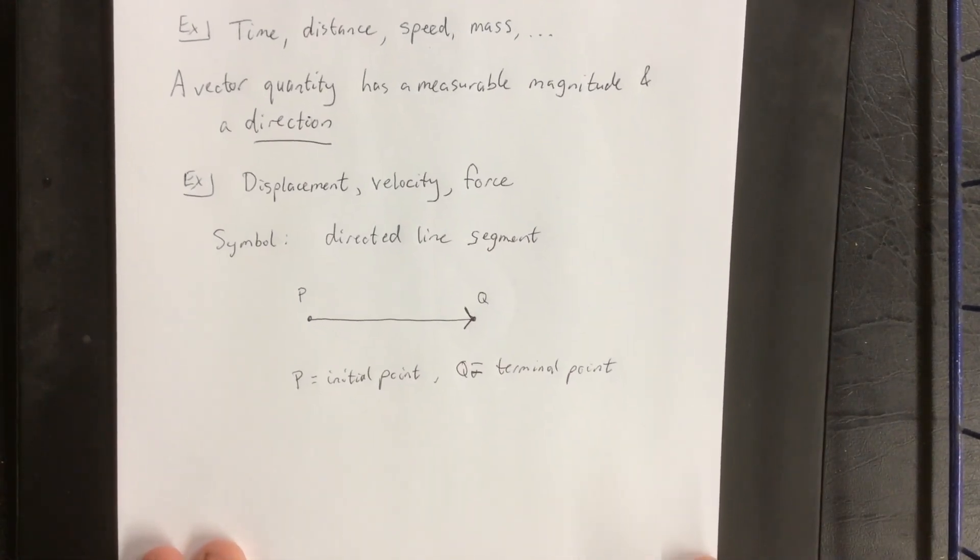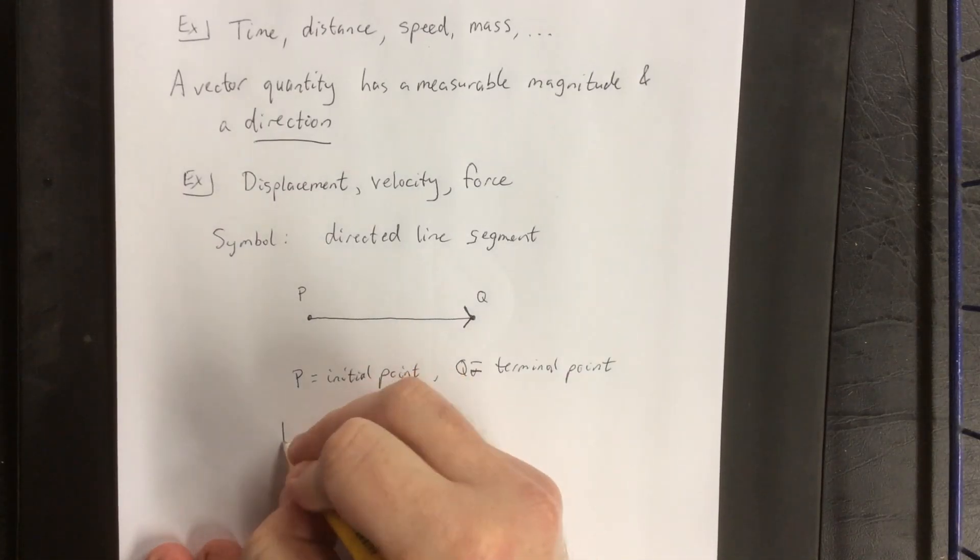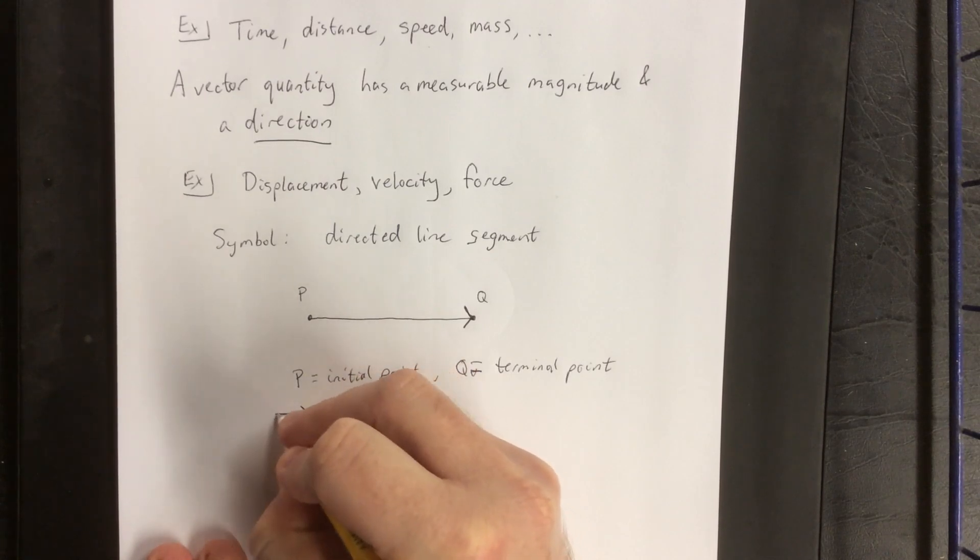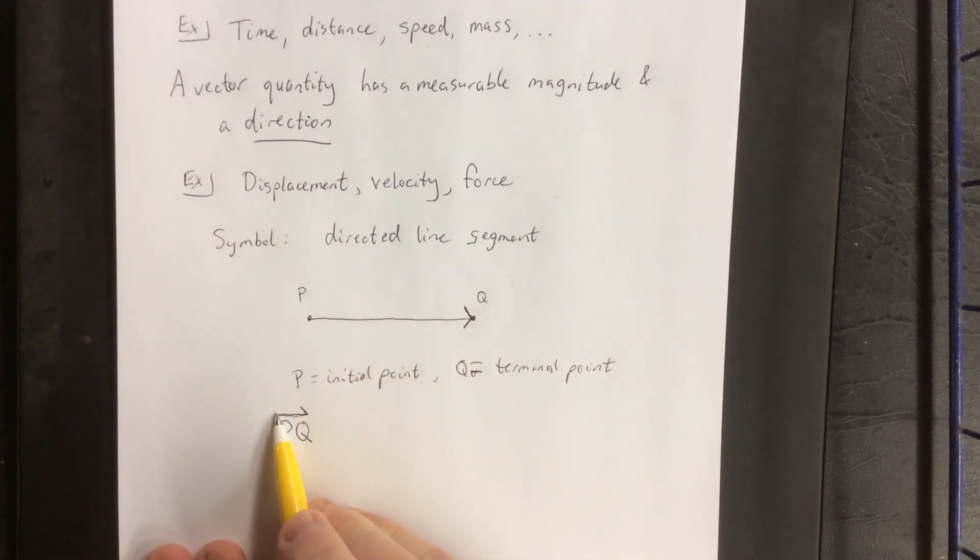There are lots of different notations that we're going to use for vectors, but the most common one is going to be with a line segment, joining the initial point on the left to the terminal point on the right. We use a little half arrow to indicate this.